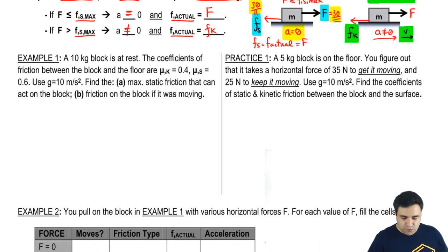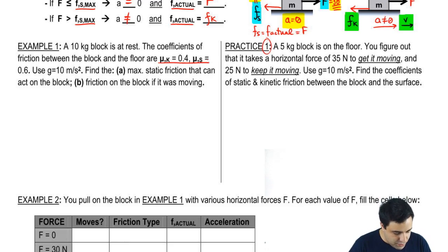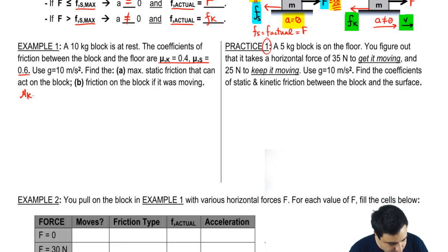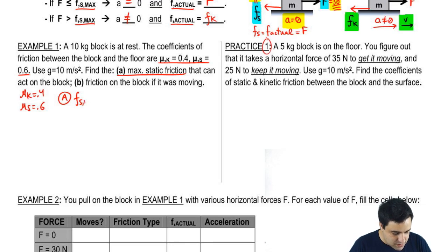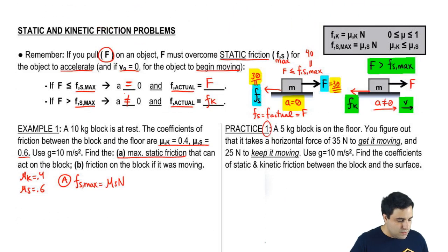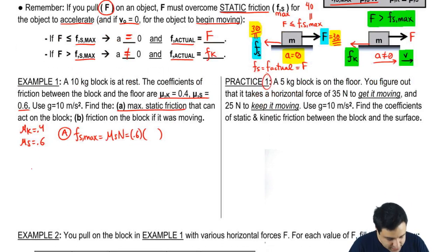Let's work out some problems. A 10-kilogram block is at rest. The coefficients of friction are given, and we're going to use g equals 10 to keep things faster. So μk is 0.4 and μs is 0.6. I want to know the maximum static friction that can act on the block. Maximum static friction is just Fs max, which equals mu static times normal.